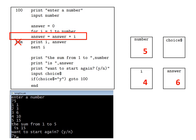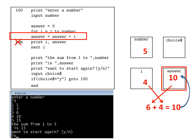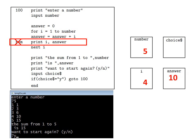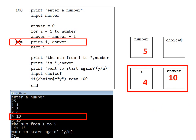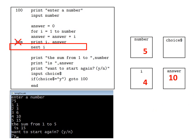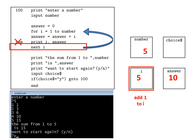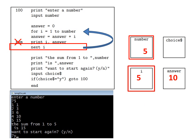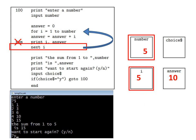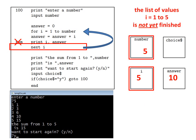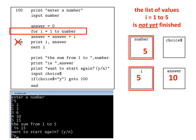Answer equals answer plus i, six plus four is ten, so answer is updated to ten. Then print i answer displays on the black screen the current contents of the memory locations i and answer. Then next i takes i and adds one to it to give five. Then, to see if we need to jump back, the computer checks the value of number. Since i equals five does not yet exceed number equals five, the computer does jump back and on it goes.